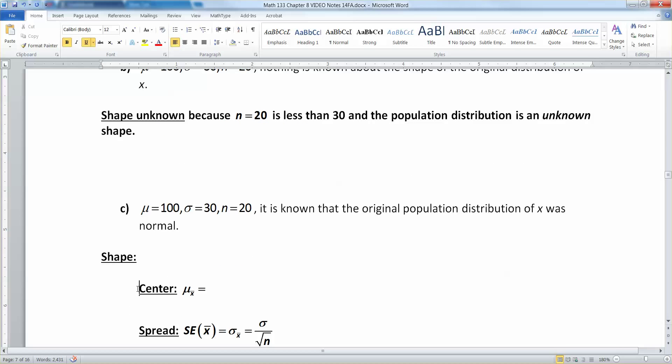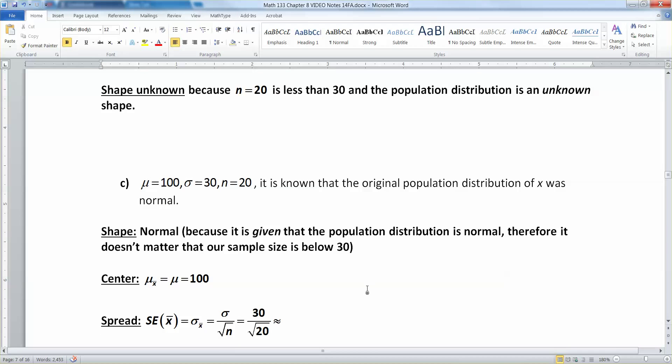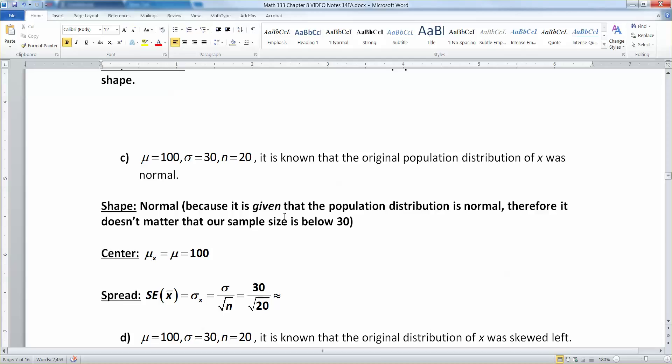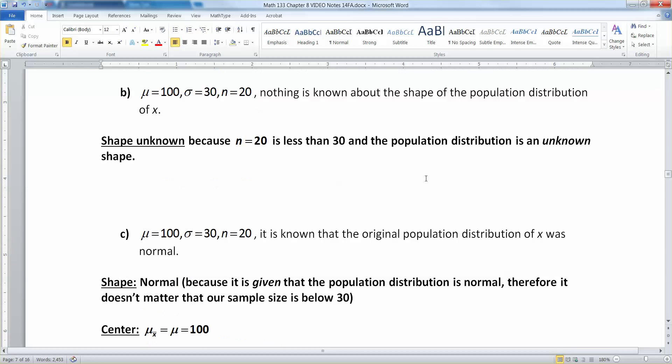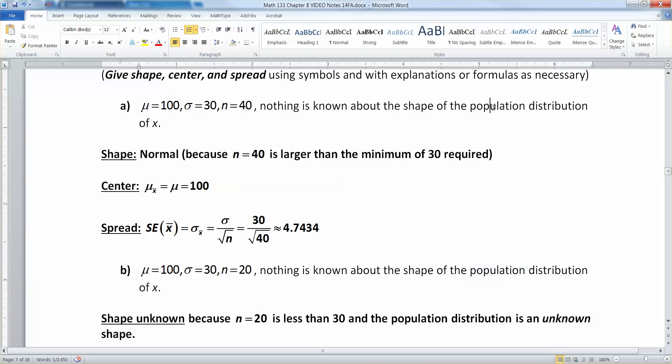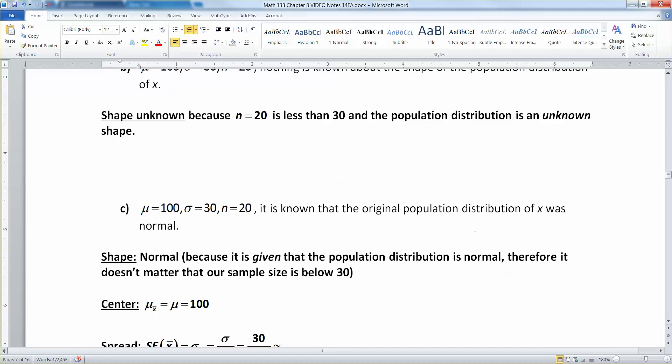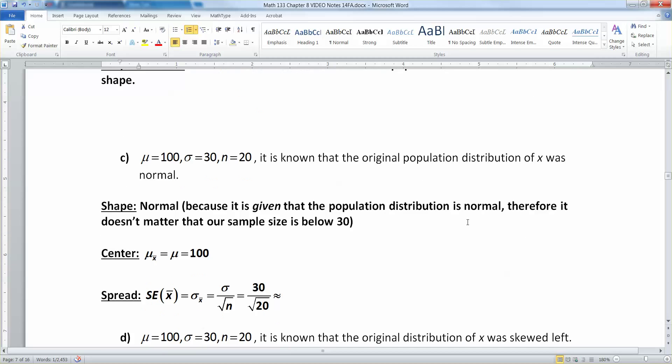It's normal for a sample size of 1, a sample size of 2, a sample size of 3, because that's essentially what the population distribution is, if you want to think of it that way. It's a sample size of 1. So I said it's normally distributed because it is given that the population distribution is normal, the original distribution. Therefore, it doesn't matter that our sample size is below 30. Actually, I'm going to change these wordings to population distribution, because that's what it really is.